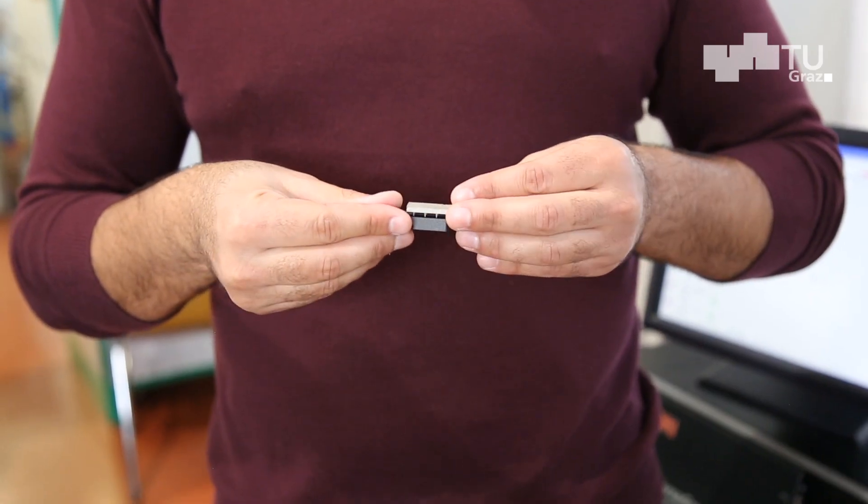We have different steps to produce our joint. The first step, we have the positioning of the parts. Here our metallic component has what we call through-the-thickness reinforcement on its surface. Those reinforcements will be inserted into the polymeric part to improve the mechanical performance of the joint. We position our flat polymeric part with those reinforcements facing the polymeric part.